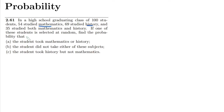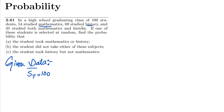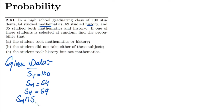Let me write the given data. I'll represent the total number of students as S, and these are 100. Students who studied mathematics I'll represent as Sm, and these are 54. Students who studied history are S(H), and these are 69. And 35 students studied both mathematics and history, which I'll represent using the intersection symbol: Sm ∩ Sh = 35.